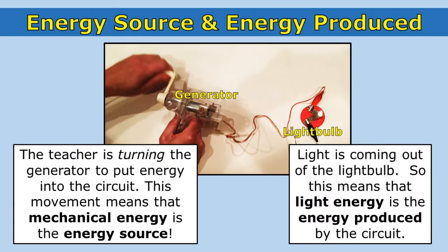Let's go through examples of identifying the energy source and the energy produced. Here, the teacher is turning a generator to put energy into the circuit. This movement means that mechanical energy is the energy source. Light is coming out of the light bulb, so light energy is the energy produced by the circuit. Electrical energy is going through the wires, but mechanical energy is the energy going in, and light energy is the energy coming out.